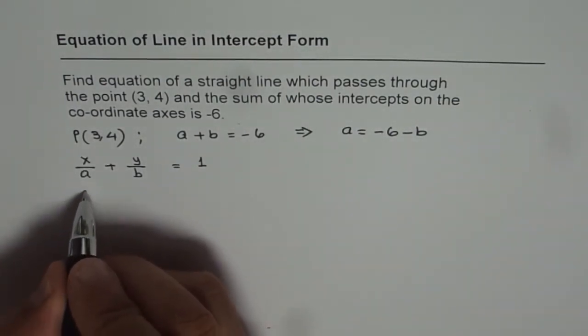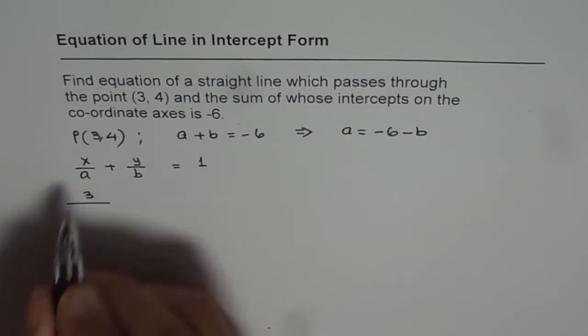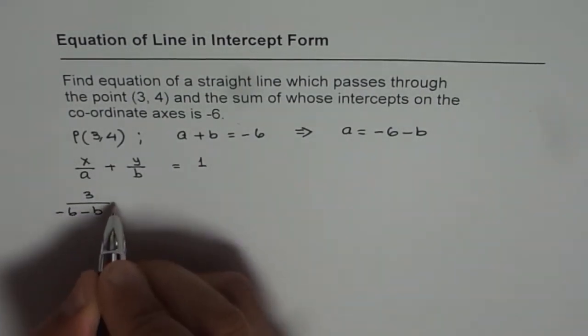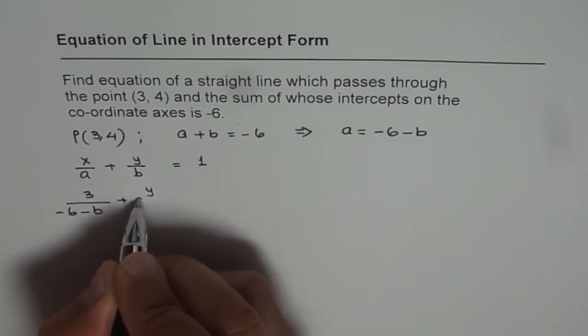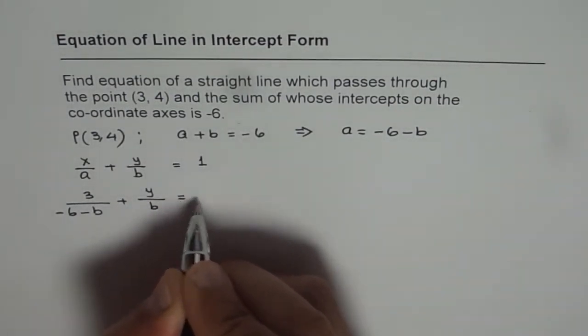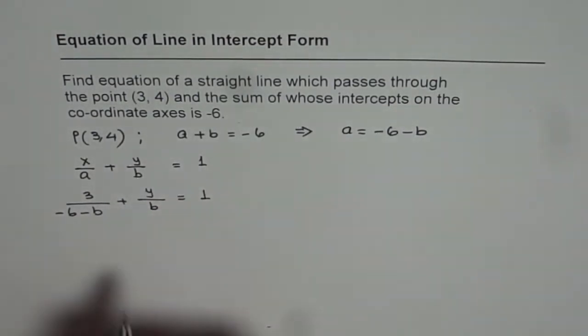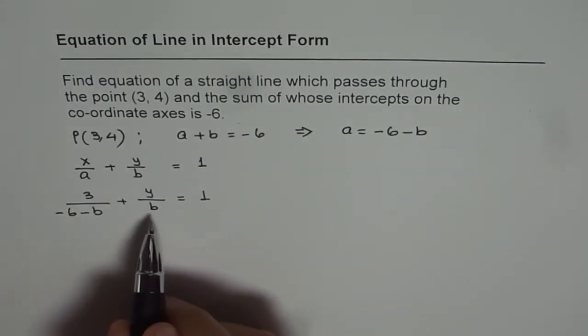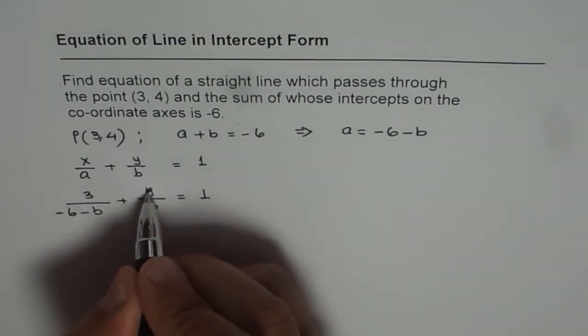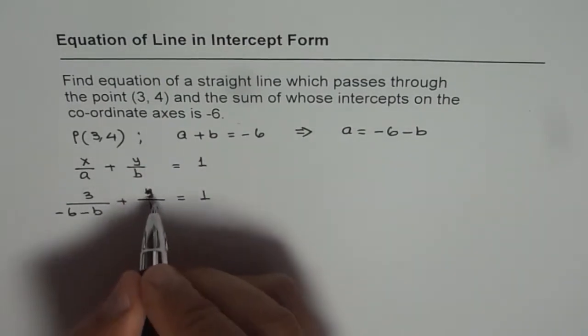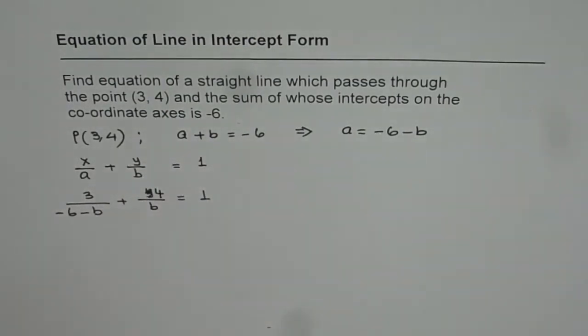x value is 3, so we get 3 over, instead of a, I am writing -6 - b plus y over b equals 1. In this equation we have only one unknown. y is 4 for us. I should have written 4, so we get 4/b.